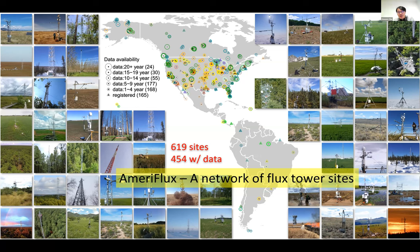AmeriFlux, I think, is a network of eddy covariance tower site stations. This is the most updated map of registered sites across AmeriFlux — North and South America — and all the dots represent the location of the sites. Some are active ones, some are historical ones. Not all of them are running currently. The circle size represents the data record we have in our database: the larger the circle, the longer the data record. Triangles mean there's a registered site that is working on getting data in at the moment.